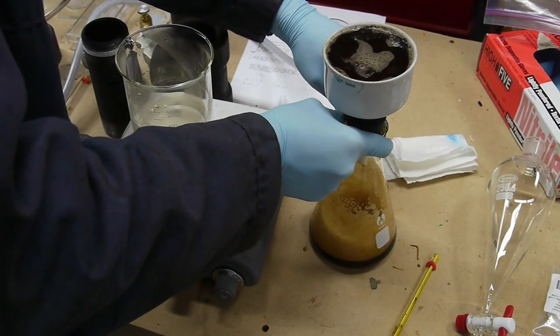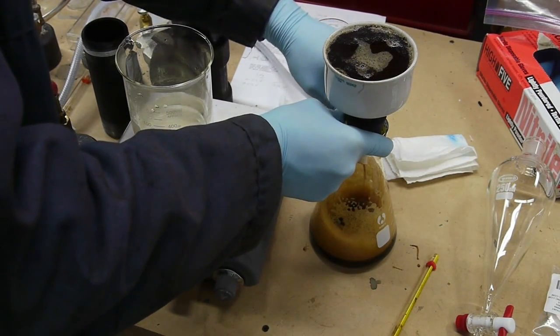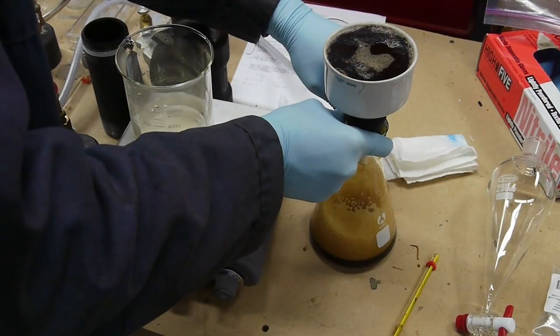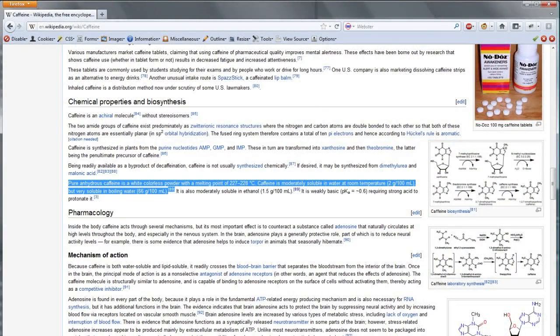You can search around on the net for your own references on how much caffeine will actually dissolve into water based on temperature - it's kind of hard to find a graph. So I used almost boiling water, at 80 degrees C or 90 degrees C, to pour through the coffee grounds to try to extract as much caffeine as possible.